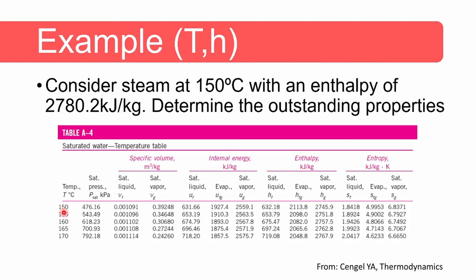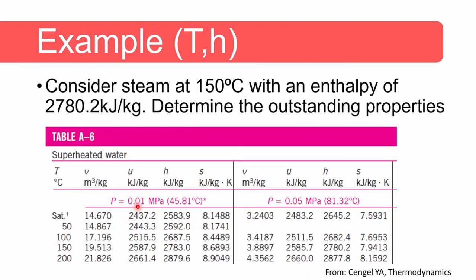At 150 degrees Celsius the enthalpy of our system is larger than that of the saturated vapor, so we conclude our system is a superheated vapor and we need to consult the superheated tables to find the pressure. At 10 kilopascal and 150 degrees the enthalpy of steam is 2783 kilojoules per kilogram, which is too large. At 50 kilopascal and 150 degrees, our enthalpy is exactly the same as that shown on the table, so the pressure is 50 kilopascal. In general it may be necessary to interpolate between different pressure values to find the value you are looking for.